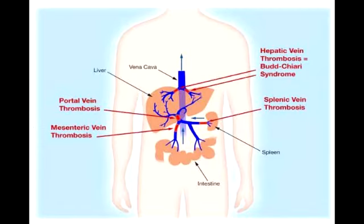What is Budd-Chiari Syndrome? Budd-Chiari Syndrome is post-hepatic venous thrombosis. There would be thrombosis at the level of the hepatic vein, leading to Budd-Chiari Syndrome. The clinical presentation of Budd-Chiari Syndrome includes abdominal pain, ascites, and hepatomegaly.